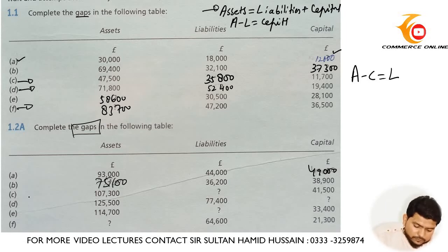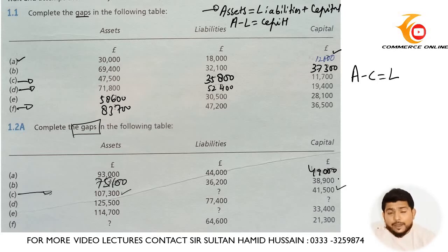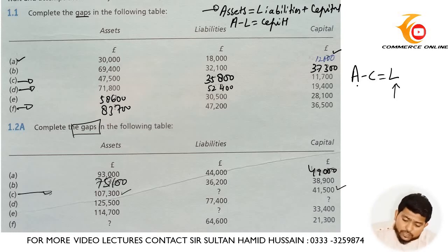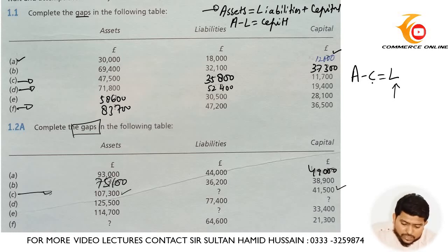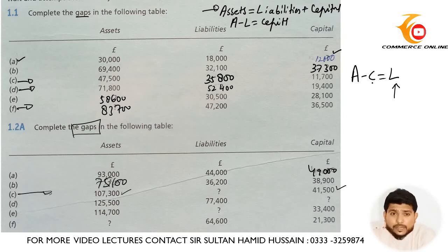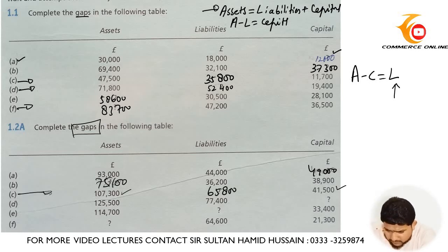Here in part C, assets are given and capital is given. If you want to find out liabilities, you need to subtract capital from assets: 107,300 minus 41,500 gives you 65,800.